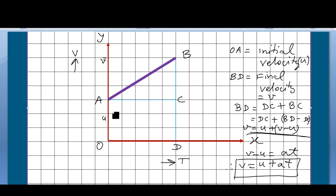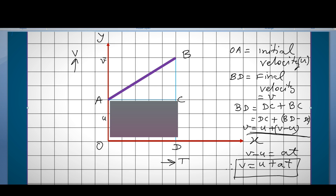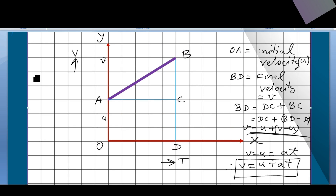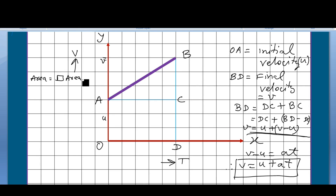To find the equation of distance, we calculate the area under curve AB. There are two parts: the area of rectangle ACDO and the area of triangle ABC. So the area under the curve equals the rectangular area plus the triangular area.